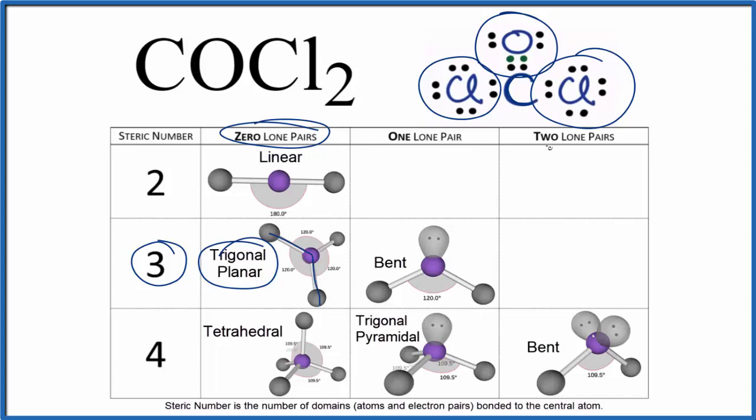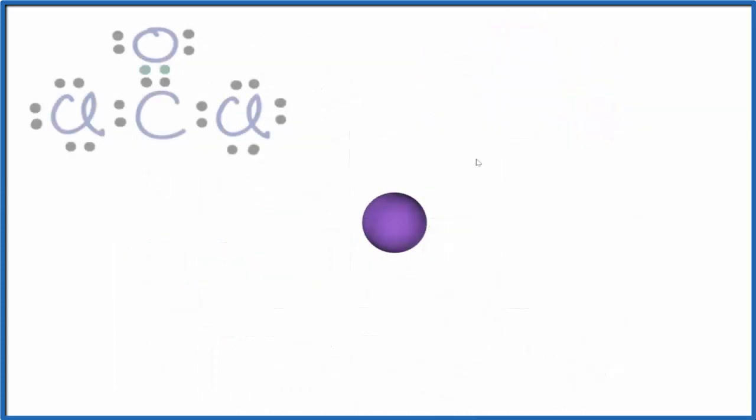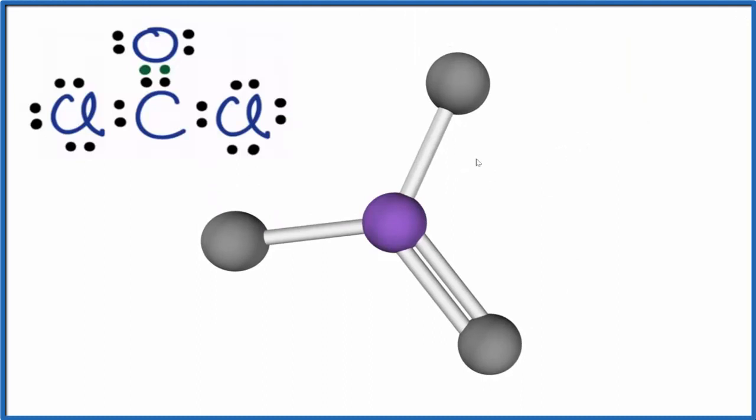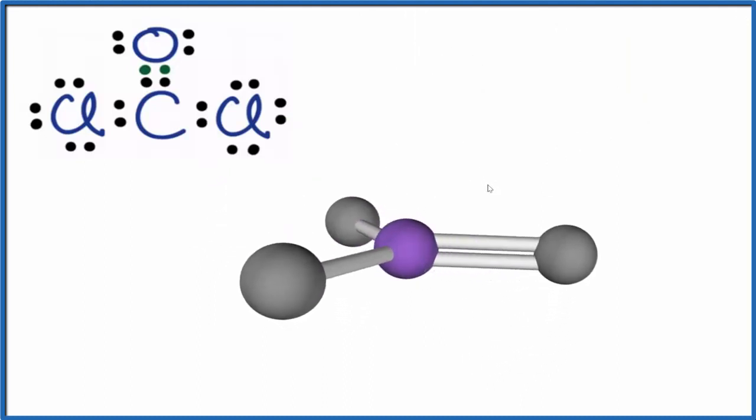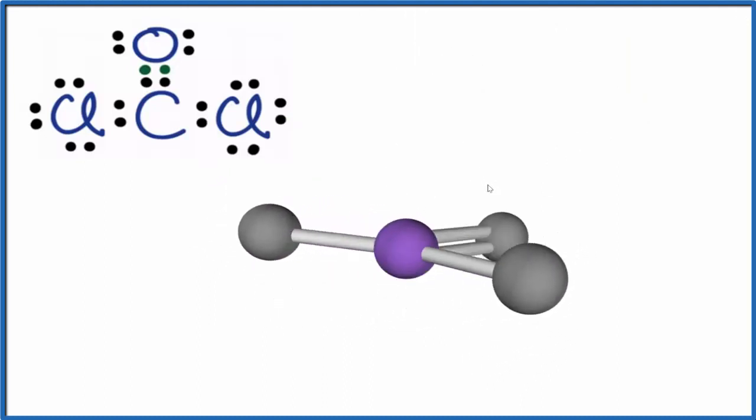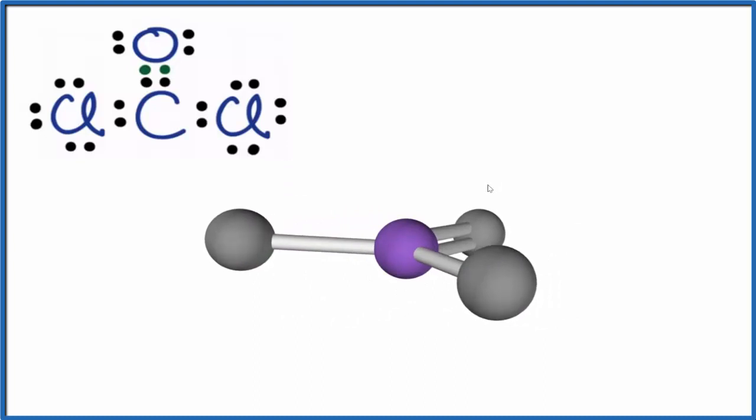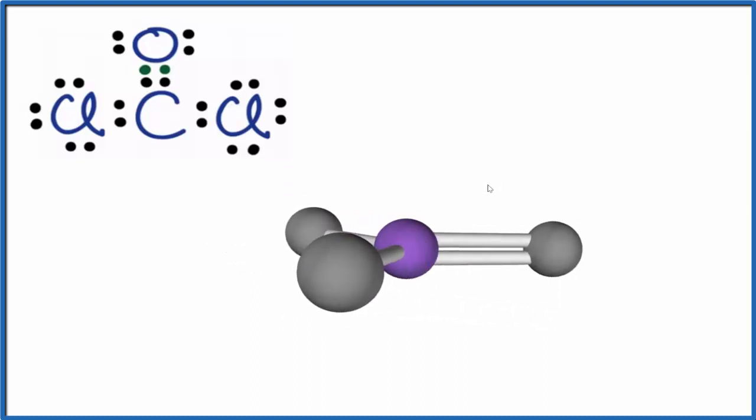Let's visualize this in three dimensions. The purple is the central carbon, here's our oxygen, and then the two chlorine atoms. You can see that we have this plane, it's all in one plane with three atoms. This is trigonal planar, the molecular geometry for COCl2.